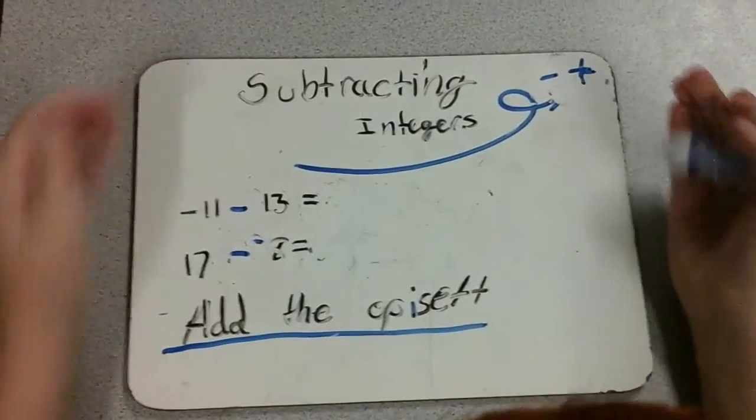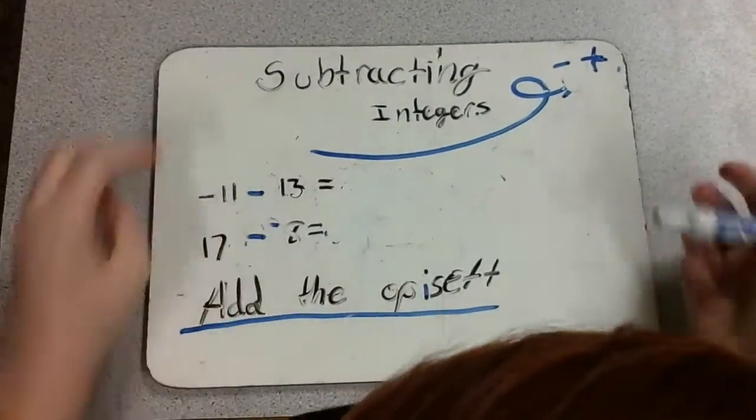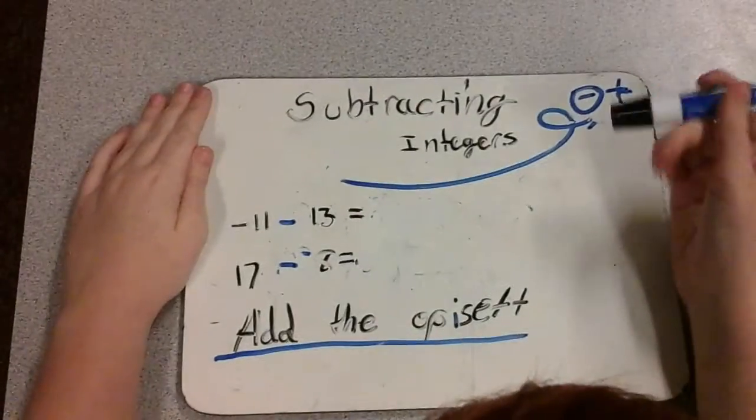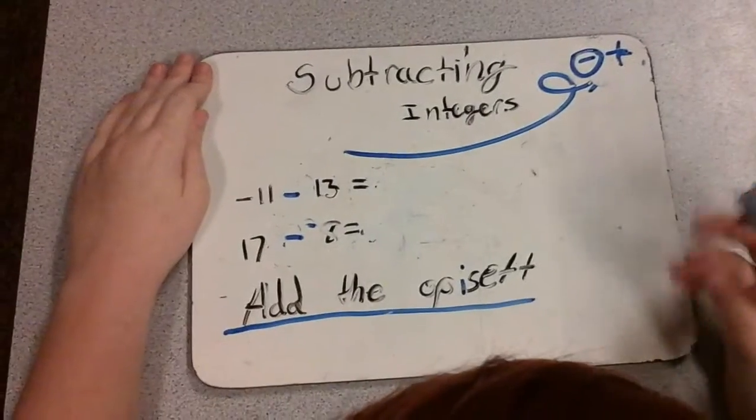Here, I'm back. This time, we're subtracting integers. I'm still the most awkward person here, so let's get this one over with. In this one, you add the opposite.